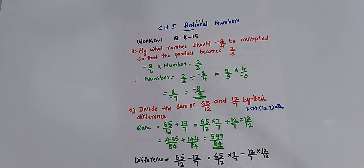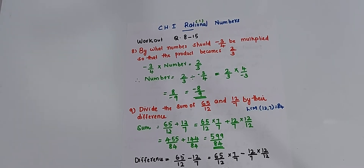So, 2 by 3 divided by minus 3 by 4. You know the division of rational numbers — when you divide, do multiplication by taking the reciprocal. So, 2 by 3 into 4 by minus 3 is equal to 8 by minus 9, which equals minus 8 by 9.